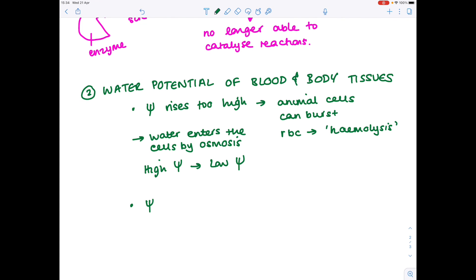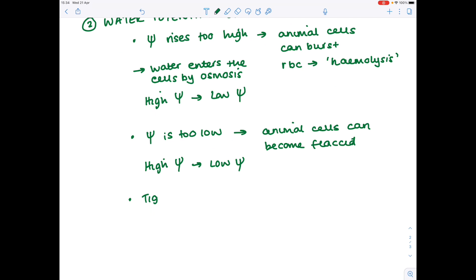Equally, if the water potential is too low in the surrounding blood and tissue cells, we know that the animal cells become flaccid. And that's due to water moving from the area of high water potential in the animal cells to an area of low water potential in the surrounding blood. So tight control of blood glucose here is essential because that will affect the water potential of the blood and tissue fluid.